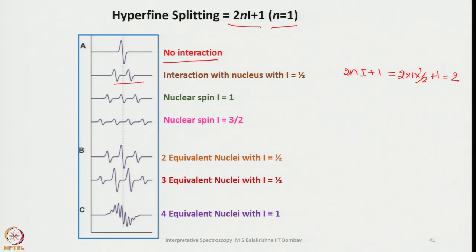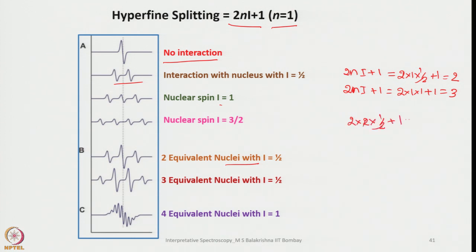We see 2 lines, and similarly when the nuclear spin i equals 1, we observe 3 lines. In the case of spin 3/2 we observe 4 lines. When we have 2 equivalent nuclei with spin i equals 1/2, we expect 3 lines, and when we have 3 equivalent nuclei with i equals 1/2 we see 4 lines, and when we have 4 equivalent nuclei we will see 9 lines. This is how we can understand hyperfine splitting by simply applying the 2Ni+1 rule.